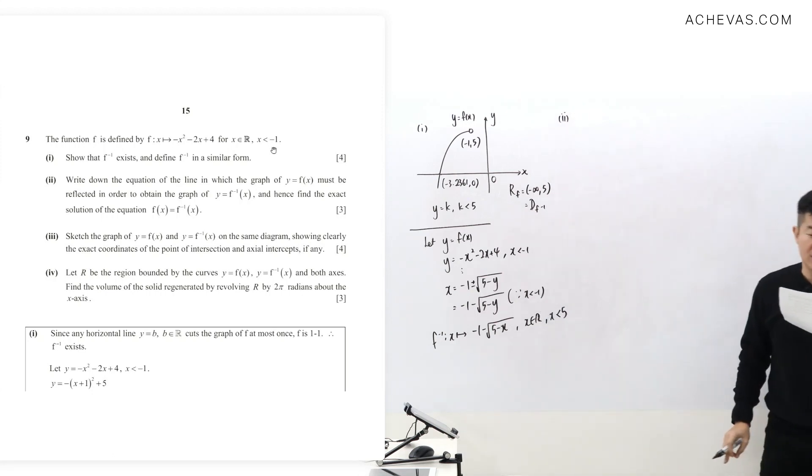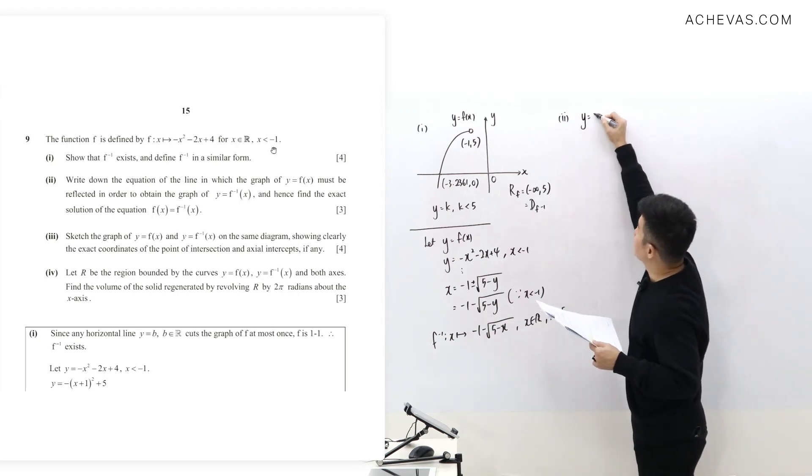Part two: write down the equation of the line in which y equals f(x) must reflect in order to obtain the graph of y equals f inverse.